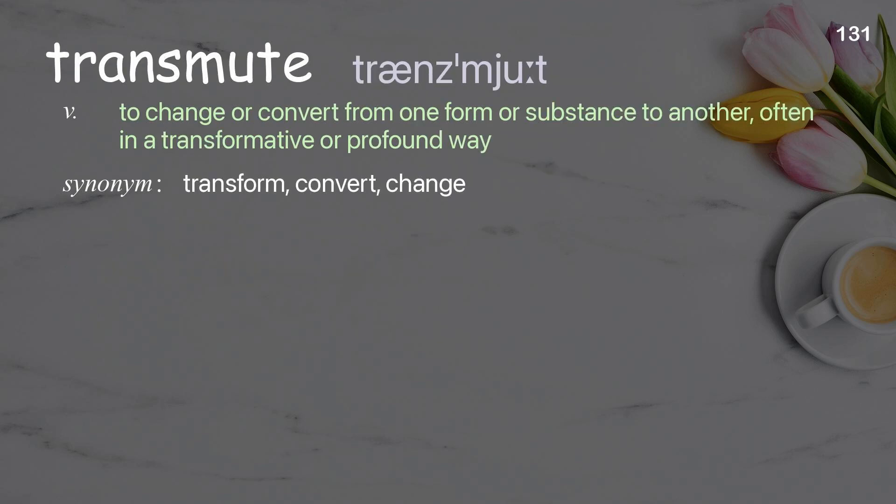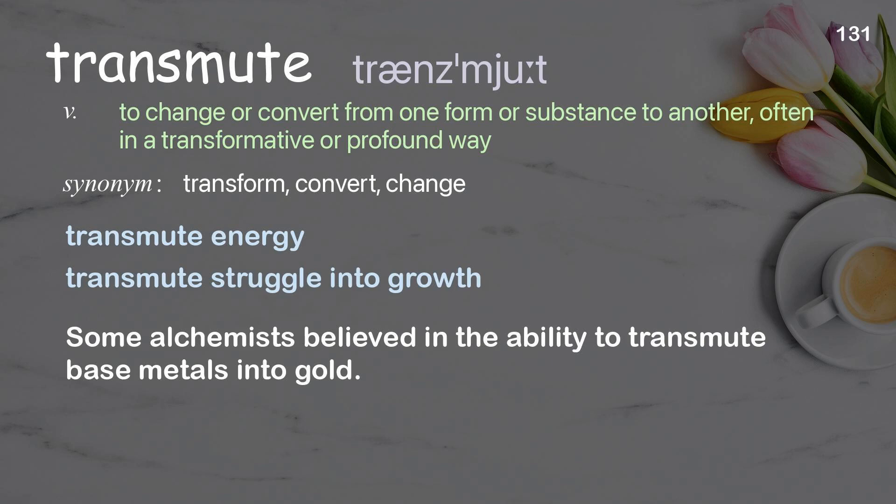Transmute: to change or convert from one form or substance to another, often in a transformative or profound way. Examples: transmute energy; transmute struggle into growth. Some alchemists believed in the ability to transmute base metals into gold.